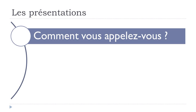So the first thing when you meet someone and you want to know the name of this person, that's the common question you will have to use: Comment vous appelez-vous. We've been seeing the verb s'appeler, to call oneself. So that's the reason the question looks this way. Comment vous appelez-vous? — What's your name? How are you calling yourself? That's the question.